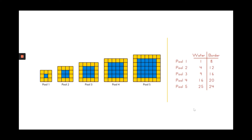What did you notice? For most arrangements, the water tiles were less than the border tiles, but then at pool five, there were more water tiles than border tiles — that's strange. Also, the border tiles go up by 4: 8, 12, 16, 20, 24 — counting by fours. But the water tiles go 1, 4, 9, 16, 25 — that's not consistent. I wonder if that will affect what our graph looks like.